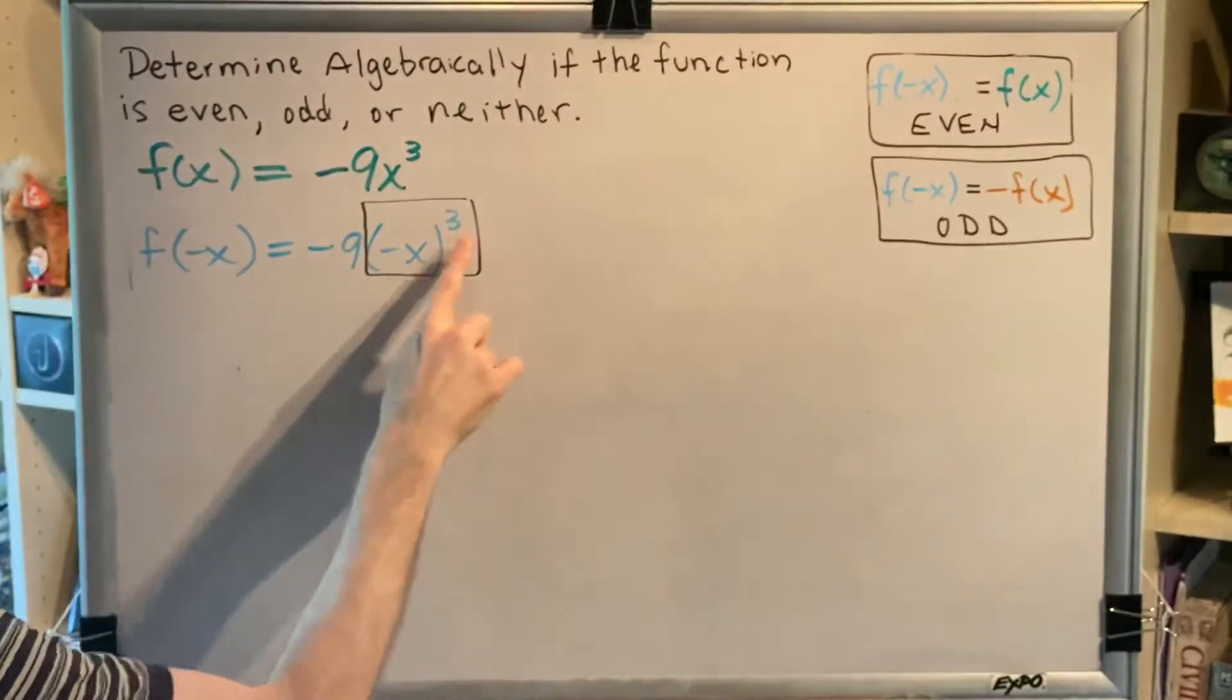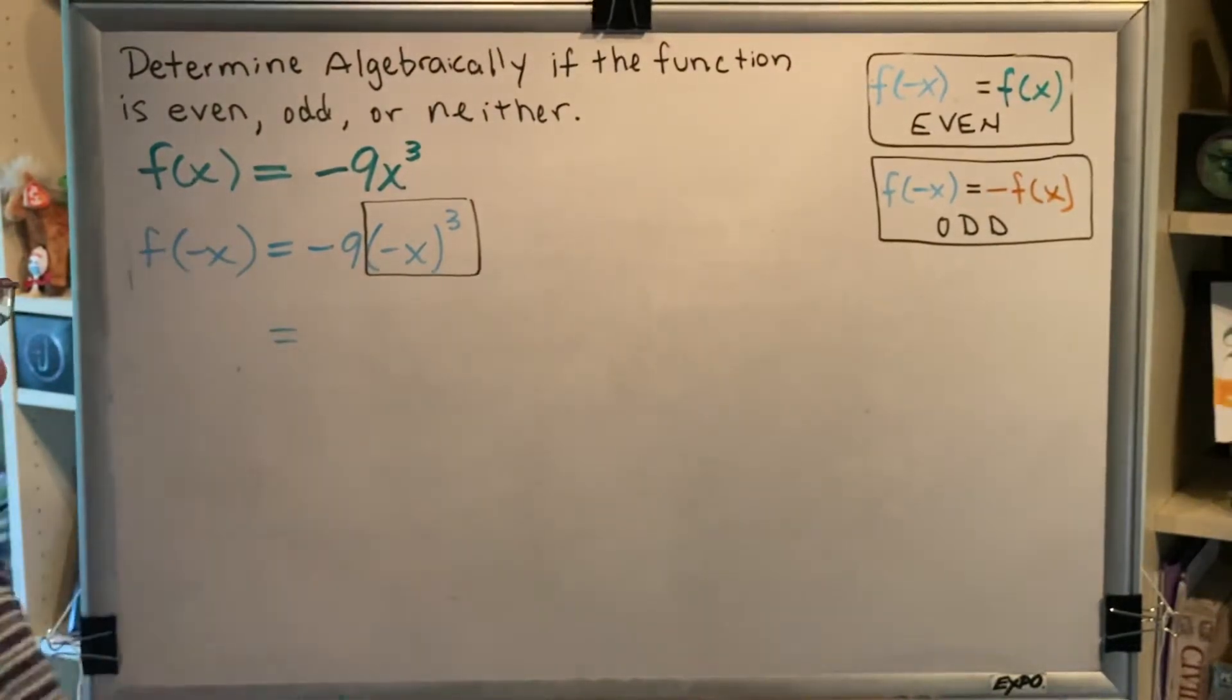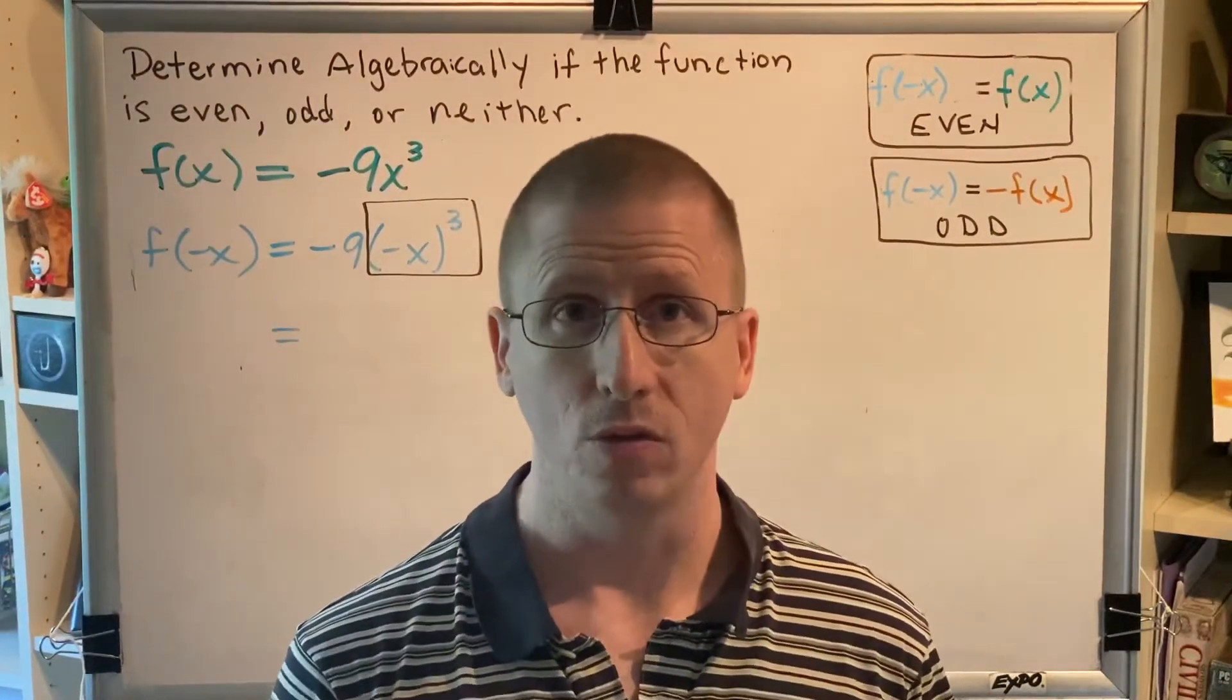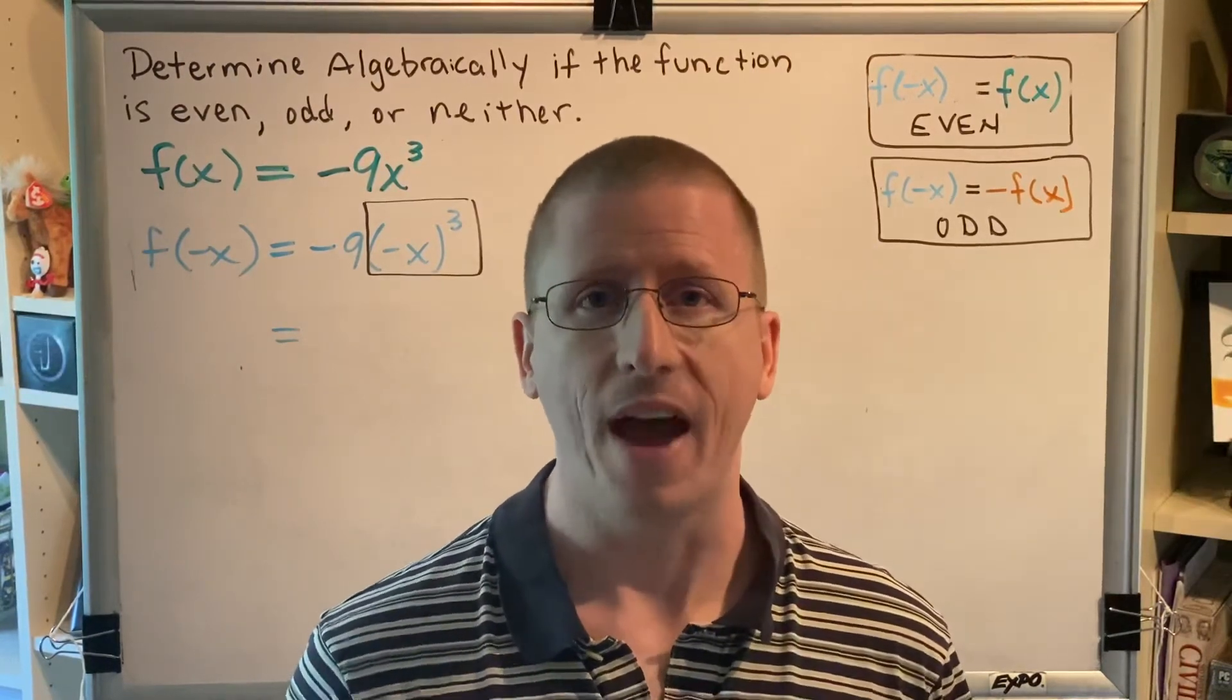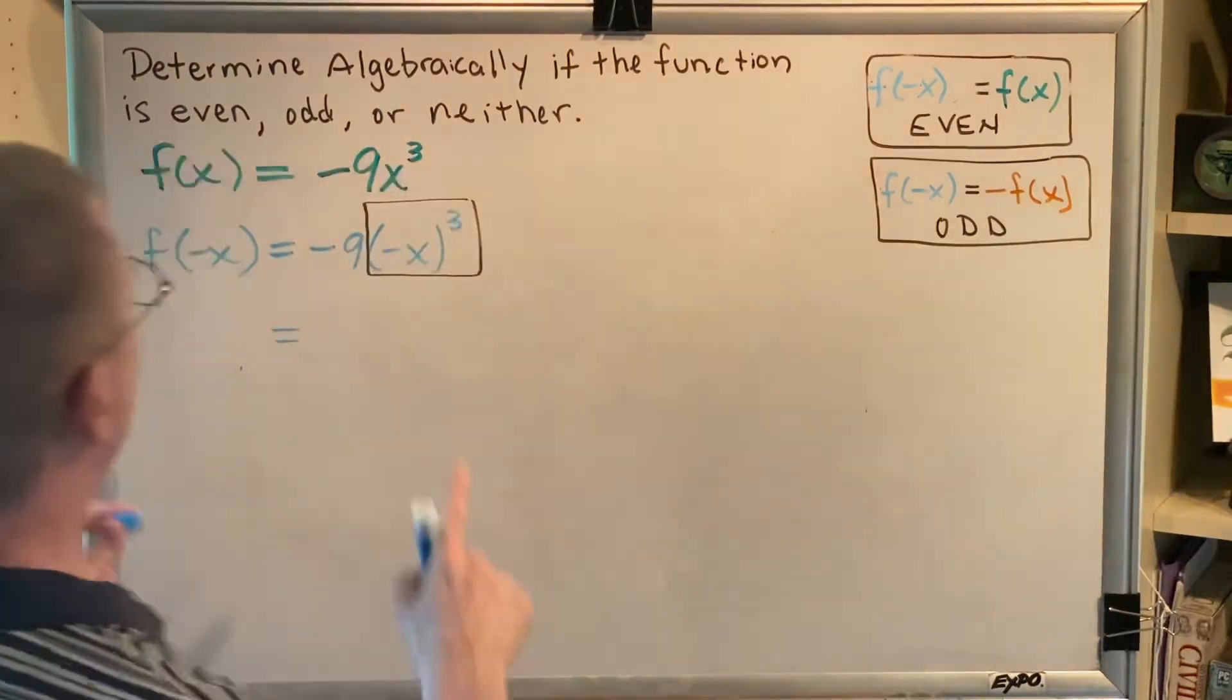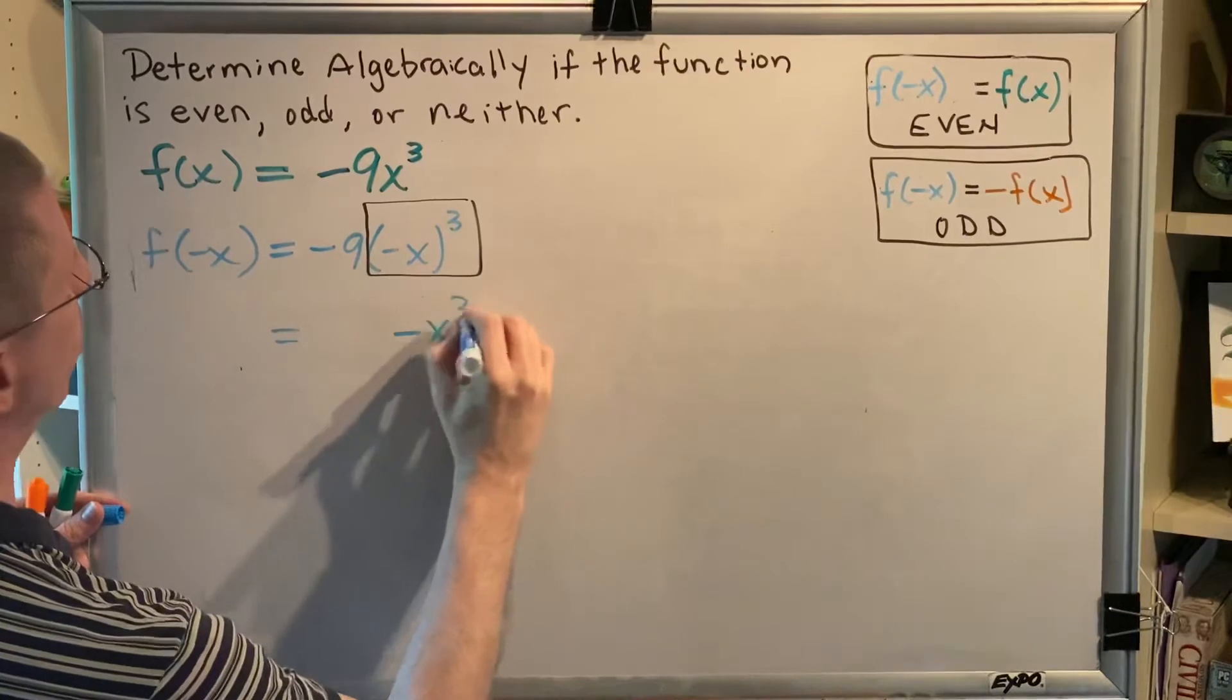What is negative x in parentheses cubed? Well, it's a negative x times a negative x times a negative x. So we've got three negatives, which is an odd number of negatives, which makes a negative result. We've got three x's being multiplied. X times x times x is x cubed. So this thing in the black box here is a negative x cubed.